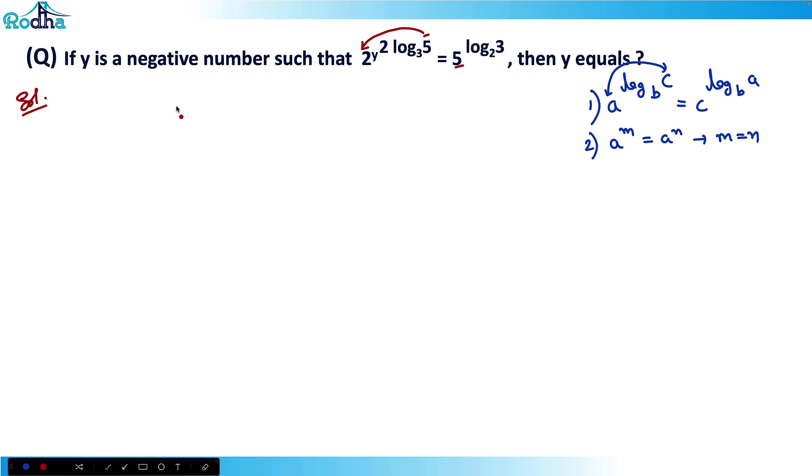So I can just use this property here. So what I can write here is 5 raised to y square log 3 base 3 and this 2 will come here. That becomes log 2 base 3.